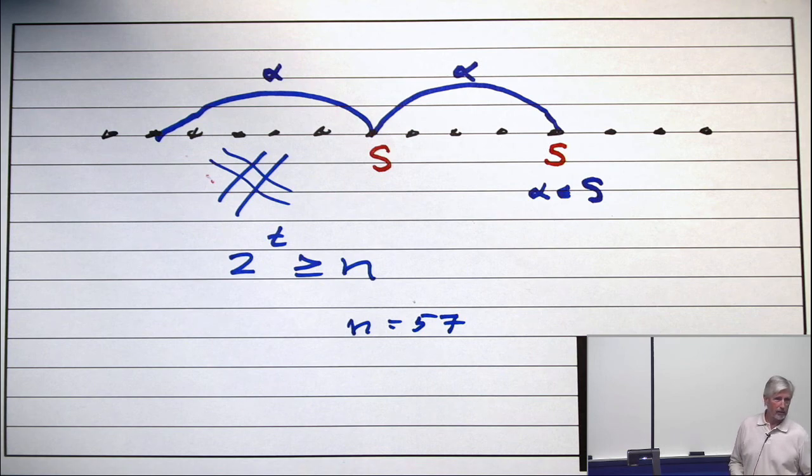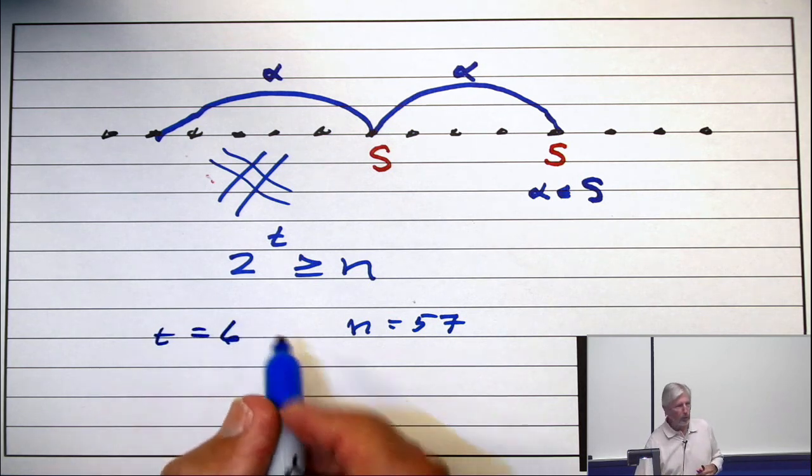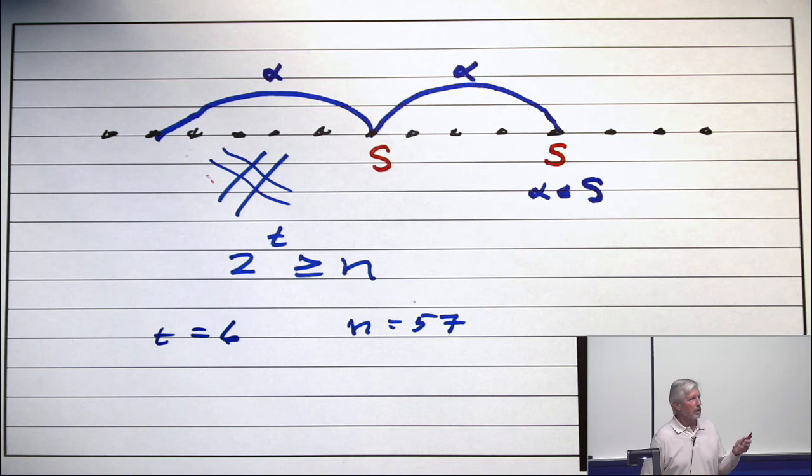6, not 5, 6. Is that clear? So, the smallest t is t equals 6. 2 to the 6 is 64. 2 to the 5 is only 32.